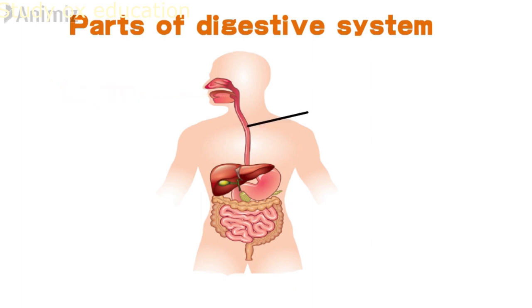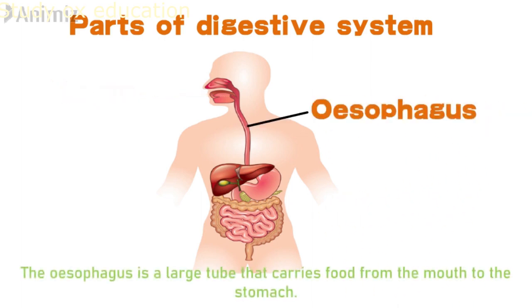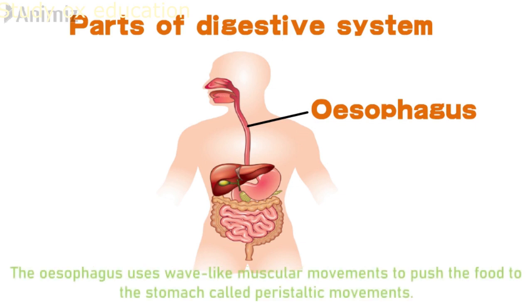Number two is the oesophagus. The oesophagus is a large tube that carries food from the mouth to our stomach. The oesophagus uses wave-like muscular movement to push the food to the stomach, called peristaltic movement.